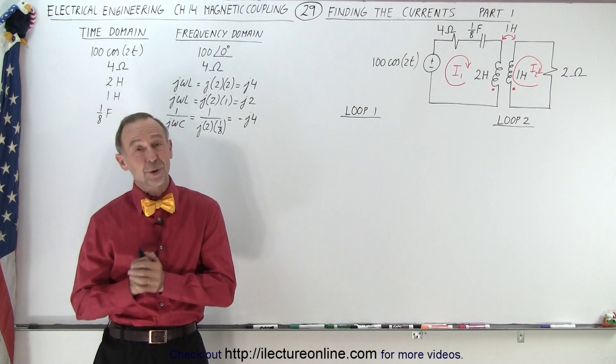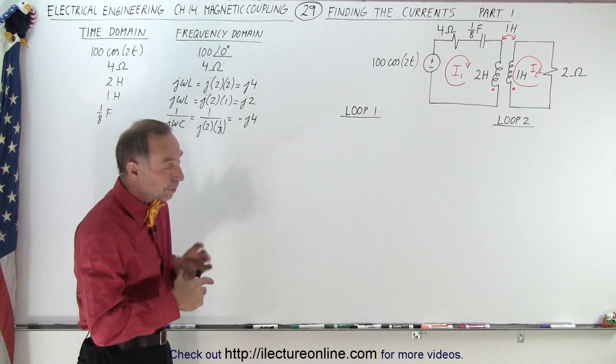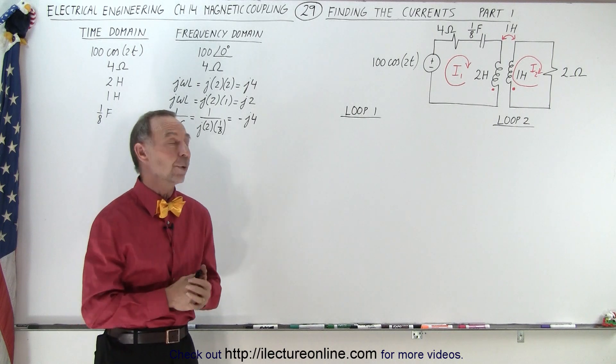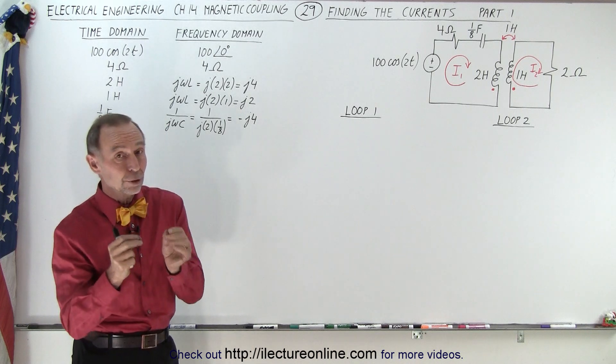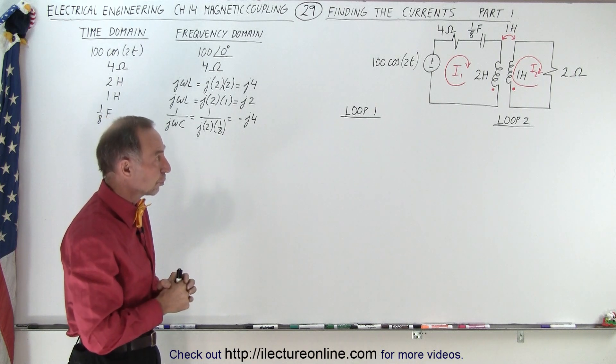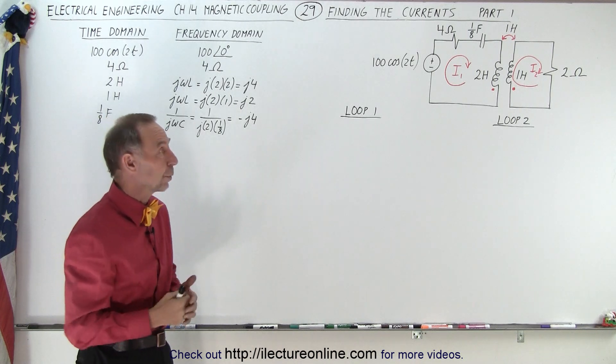Welcome to our lecture online. So here we have another example, a little bit more complicated than the previous one, where we have to find the current and of course we have magnetic coupling between the two inductors in the two loops. They're otherwise not connected with one another.